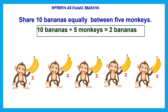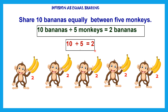That means ten bananas, when divided among five monkeys, each monkey got two bananas. Representing this using numbers and mathematical symbols: ten divided by five equals two. This is the division fact for equal sharing — ten bananas shared among five monkeys, each monkey got two bananas.